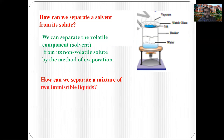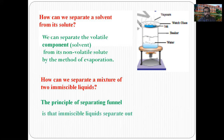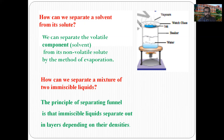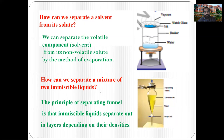How can we separate a mixture of two immiscible liquids? By using the principle of the separating funnel, the immiscible liquids separate out. The immiscible liquids form different layers based on their relative densities. The principle of the separating funnel is that immiscible liquids separate out in layers depending on their densities, and separation takes place easily using a separating funnel.